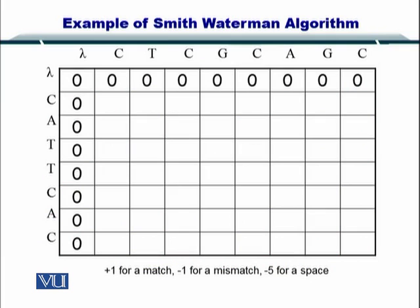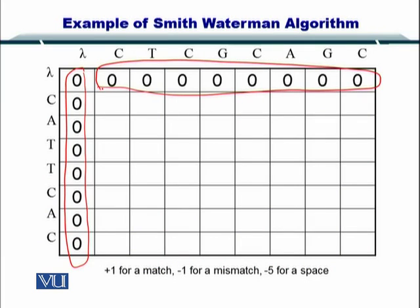So to start with, you initialize the first column with zeros and the first row with zeros as well. I would like to remind you that in the Needleman-Wunsch algorithm, these two were initialized by -i multiplied by the gap penalty, which in this case is -5, as well as -j multiplied by the gap penalty.